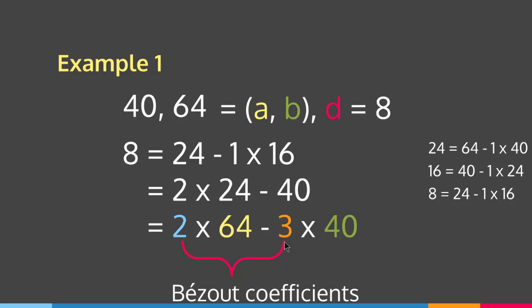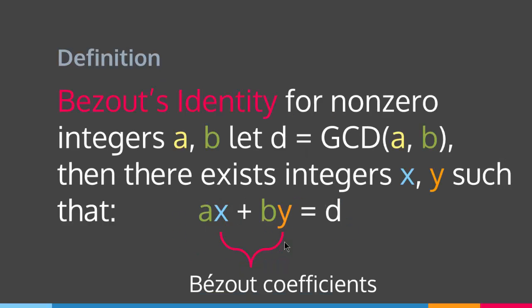To summarize: Bézout's identity states that for non-zero integers a and b with greatest common divisor d, there exist integers x and y such that a times x plus b times y equals d. These x and y are called Bézout's coefficients, and we can find them using the extended Euclidean algorithm. With this we come to the end of this lecture.